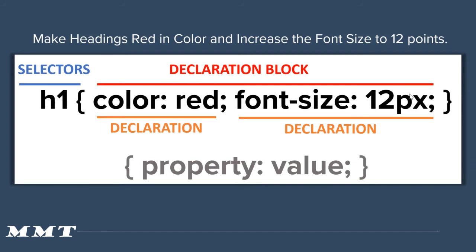Inside the declaration block, you see two declarations separated by semicolons: color is red, font-size is 12. This follows the format of property, colon, value, semicolon — similar to JSON syntax. The first declaration says color should be red, the second says font-size is 12 points. The selector — h1 — means all h1 tags on the page should have color red and font-size 12px. So it changes the h1 tag settings, making it red instead of black and 12 points instead of the default size.